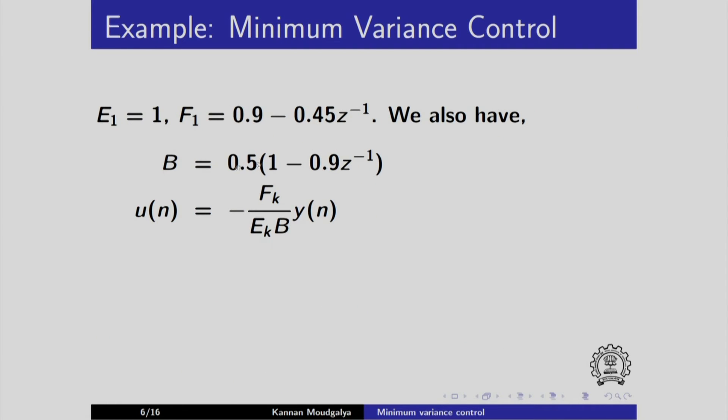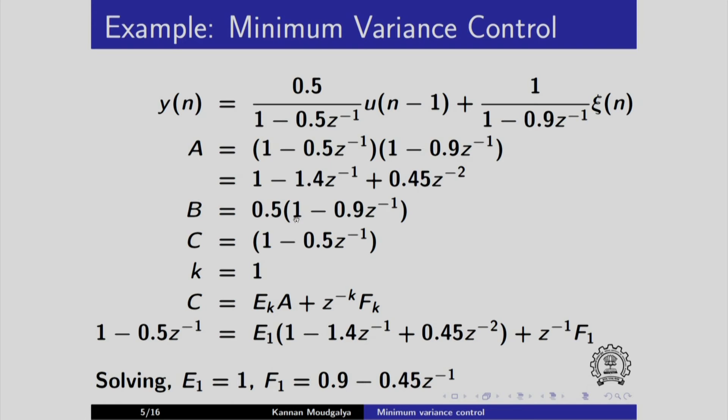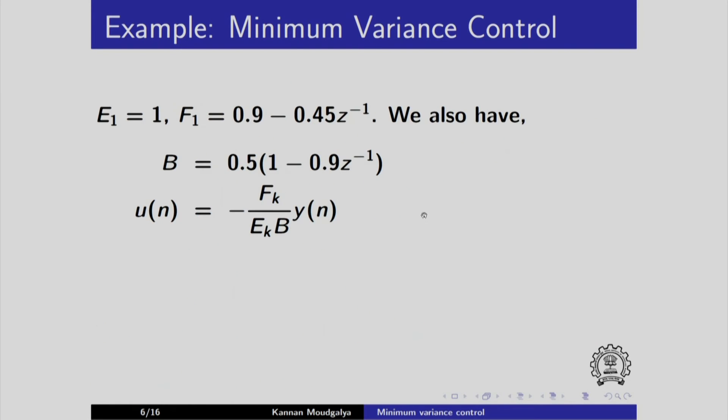This is what we had and we also have b equals 0.5 into 1 minus 0.9 z inverse. We can go back and check that. You can see that 0.5 into 1 minus 0.9 z inverse and this is the control law. When I substitute for f 1 here and then e 1 is 1, I get this control law. When I simplify it, I get this controller. You may want to note this down.